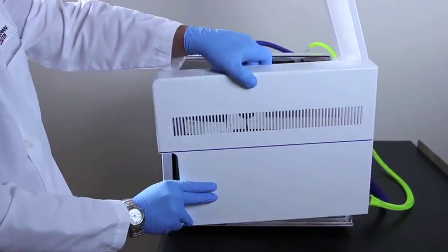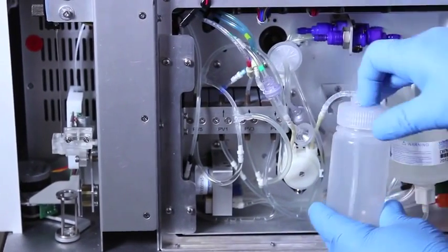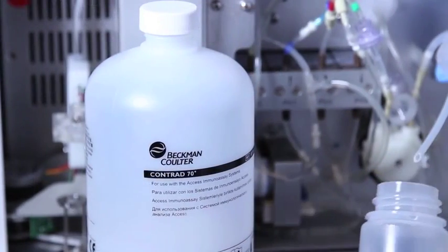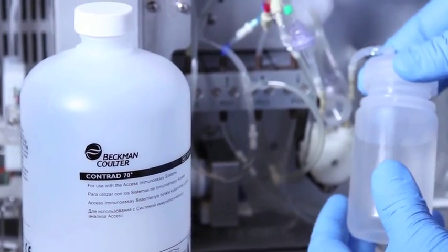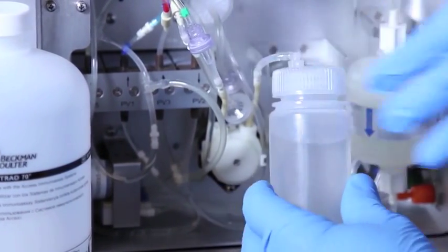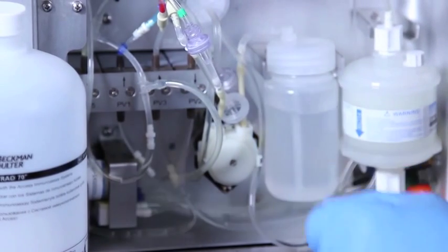Remove the deep clean bottle and fill with a one-to-one mixture of Beckman-Coulter Contrad 70 and deionized water. Please refer to the IFU for more detailed instructions. Replace the newly filled bottle. This completes the deep clean procedure.